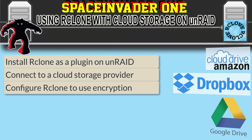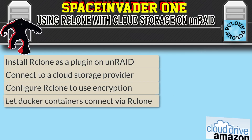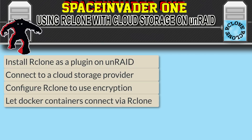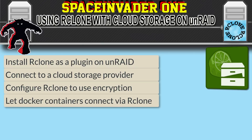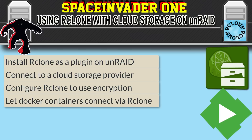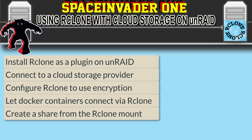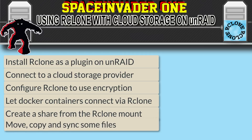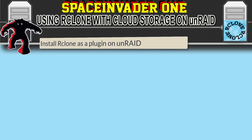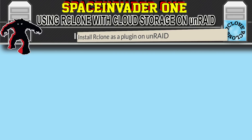Then we'll configure rClone to use encryption, configure some Docker containers to connect via rClone — in this video we'll use a file manager called Crusader and a media endpoint called Emby. Then we'll create a share from the rClone mount for use on our network, and finally we'll do things like copying and syncing files and directories.